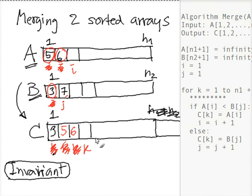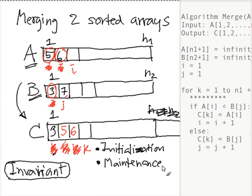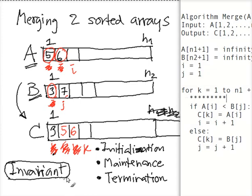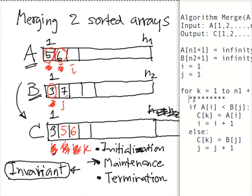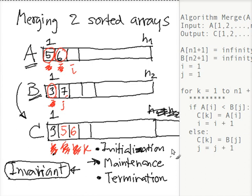We want to prove three properties: initialization, maintenance, and termination. Initialization is something we want to show is true in the first round — the invariant holds at the start. Maintenance says that if it's true at the beginning of one iteration, it should be true in the next iteration as well. And termination will use this maintenance property to show that in the end, you get what you want.